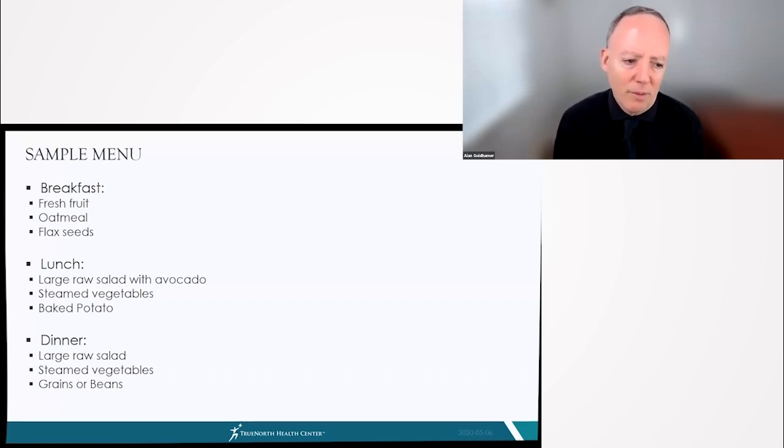One meal might be fresh fruit, it may be some oatmeal and flax seeds. Another might be a large vegetable salad, some steamed vegetables, maybe a potato, maybe grains or beans in the evening meal.